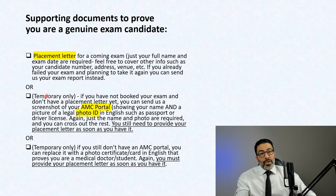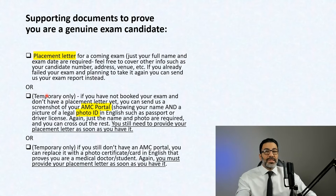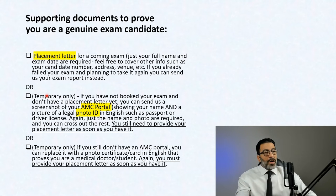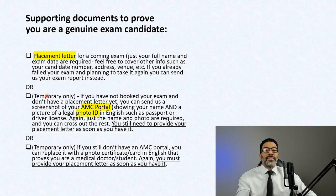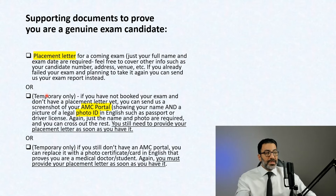The first and most important document we rely on is your placement letter for the exam. When you apply for any of the AMC examinations, AMC will send you a letter showing your name, your exam date, and your venue. Of all the information in that placement letter, the only things we need are your exam date and your name in English — so feel free to cross out the rest of the information before you submit this document for approval.